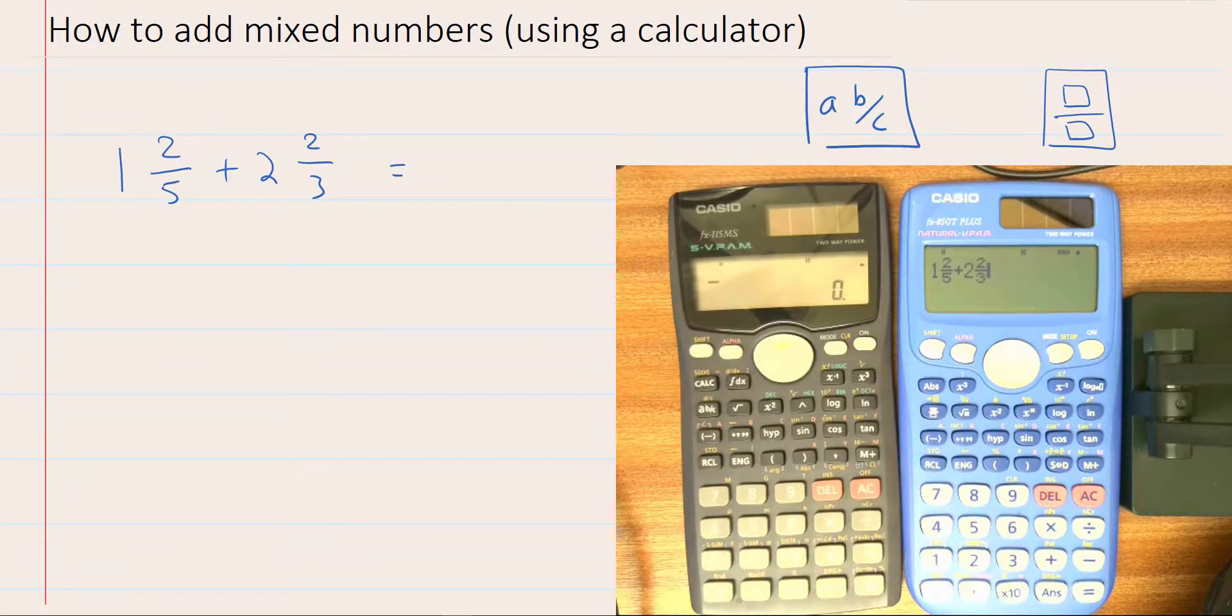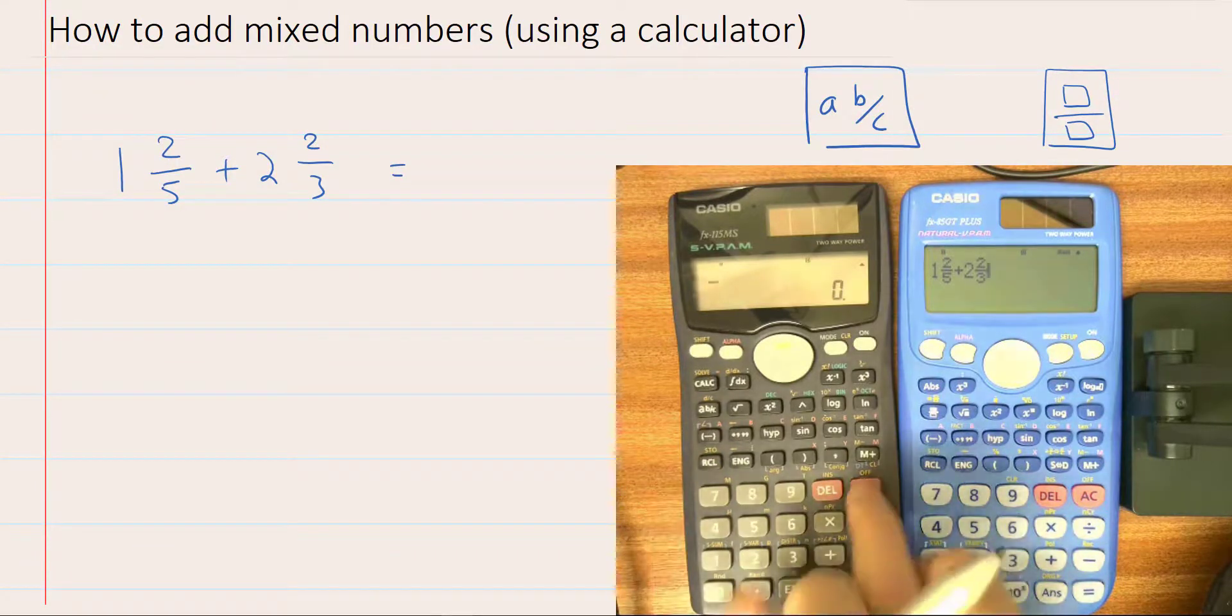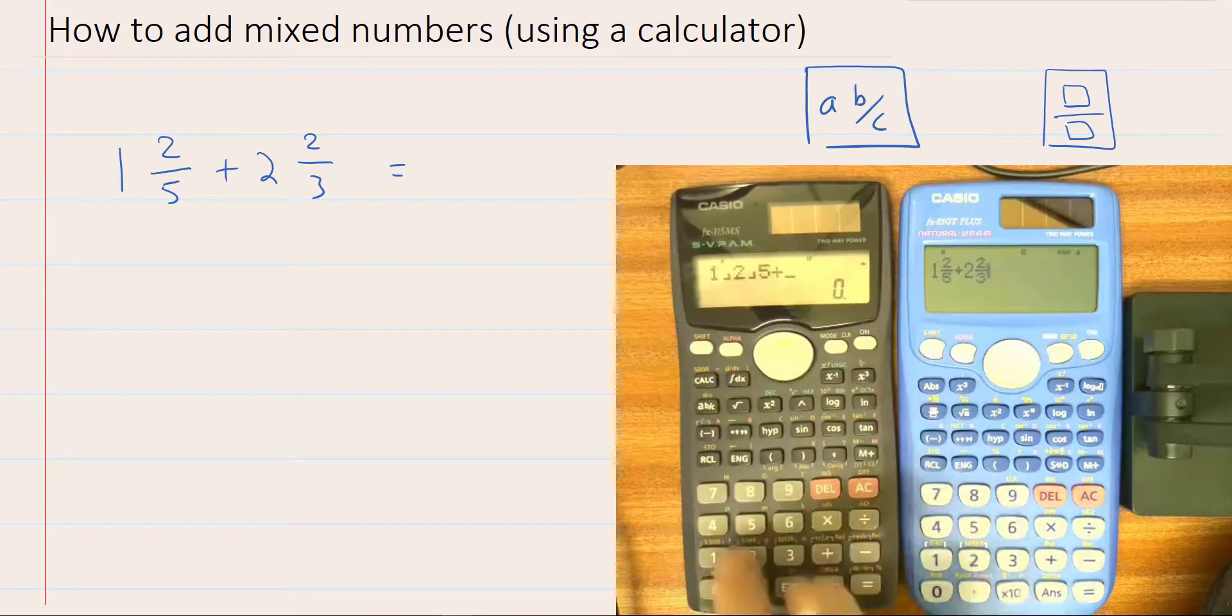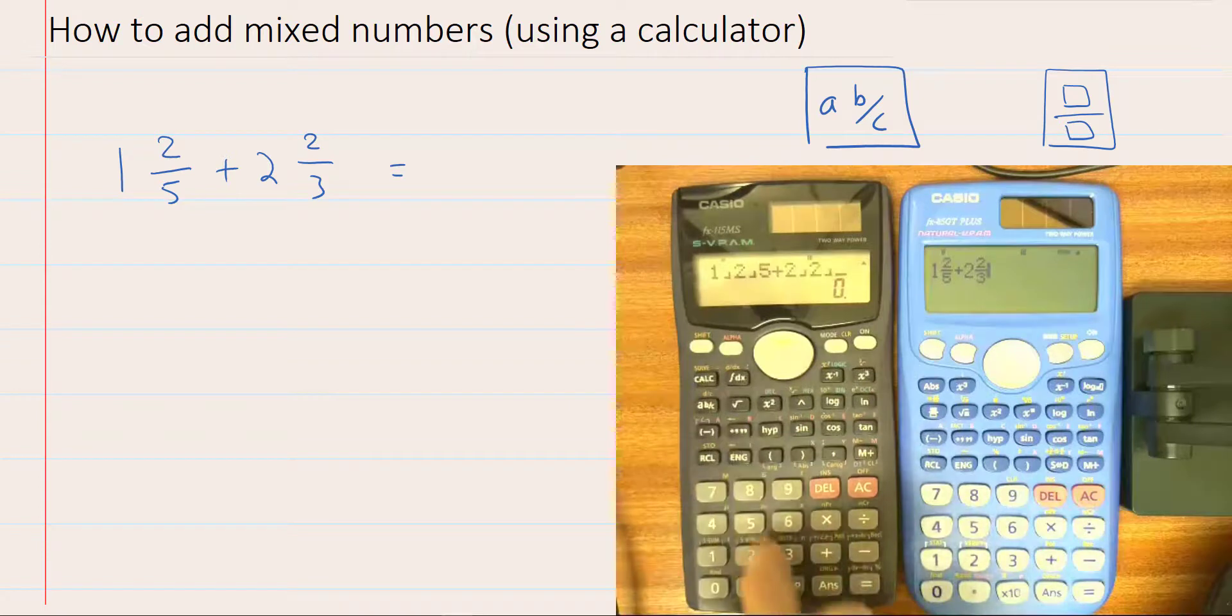1 and 2 fifths plus 2 and 2 thirds. Tab that in the calculator. 1, 2 fifths plus 2, 2 thirds.